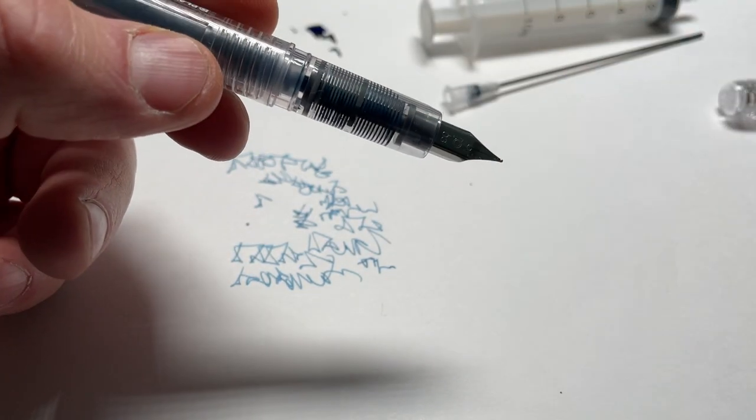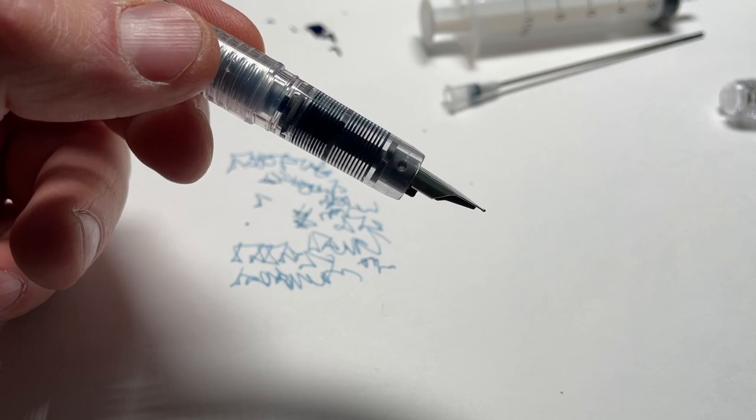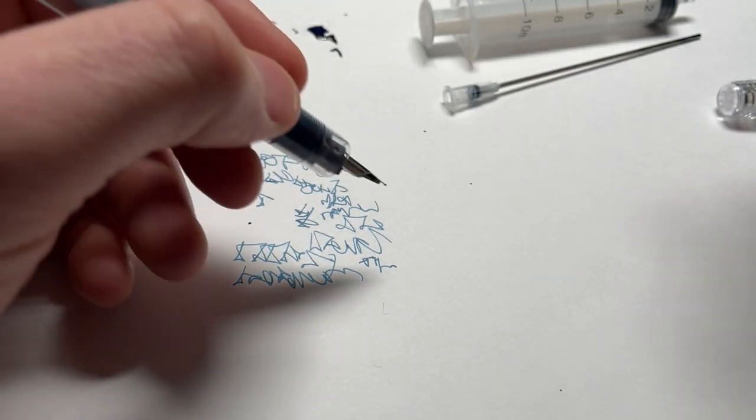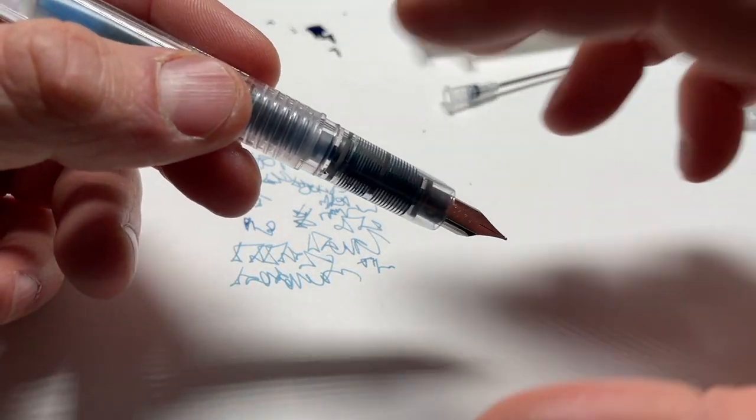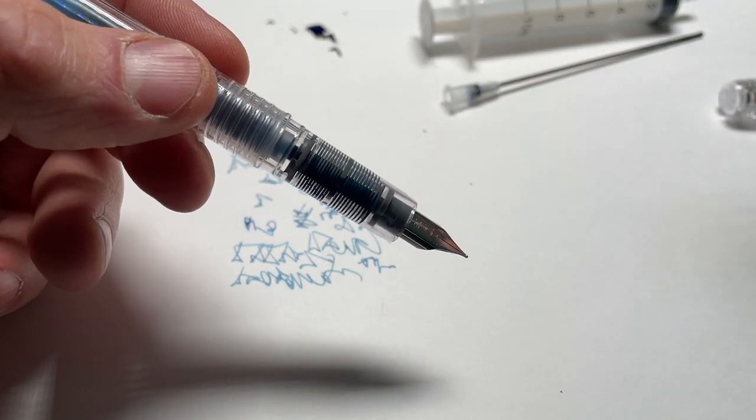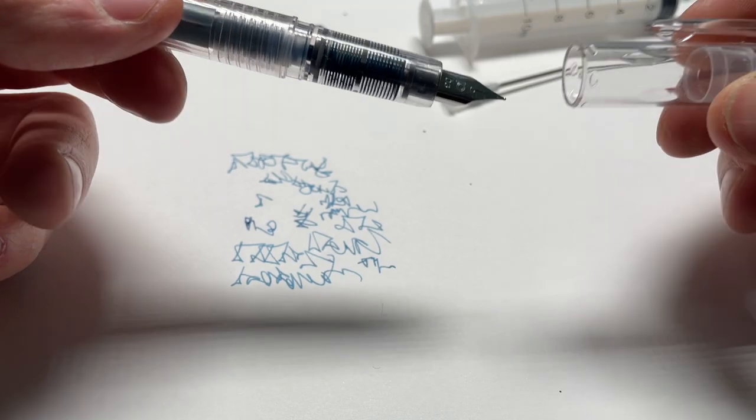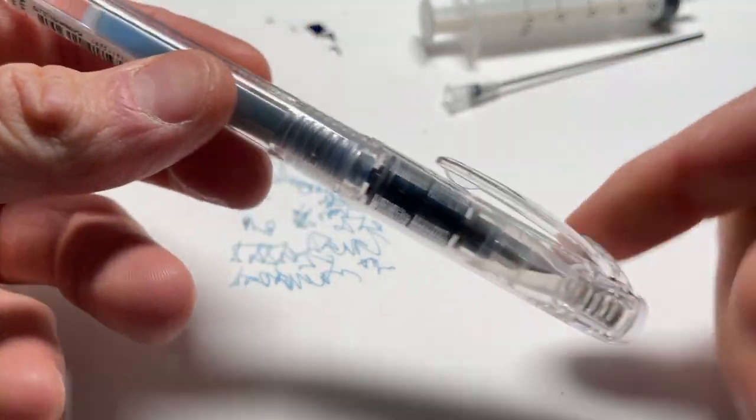You only have to do this whole deep clean process if you want to change the color and have no shift from one color to the other or if you let the pen sit for a couple months and it dries out. So this could be a lot simpler process if you're using the pen all the time.